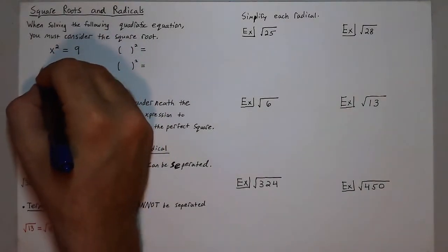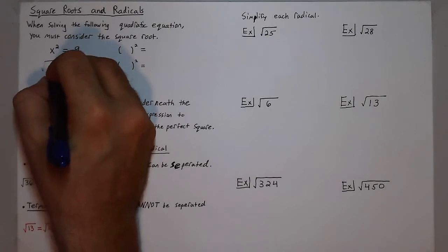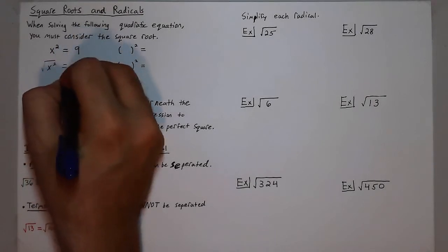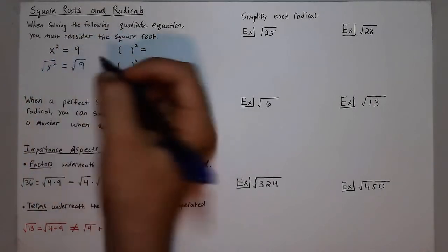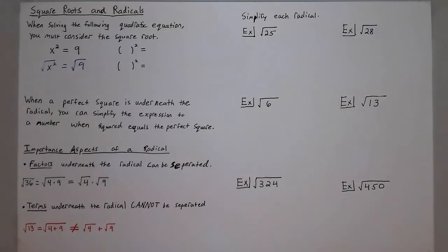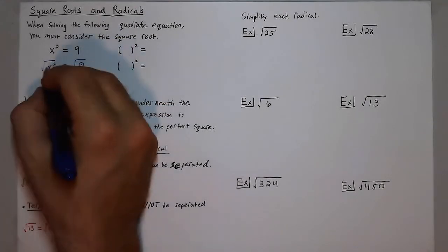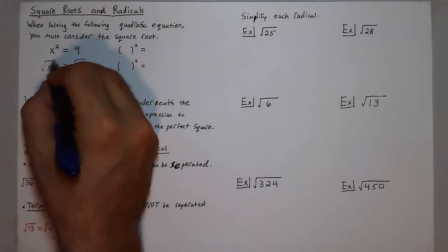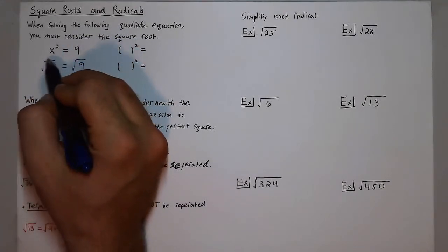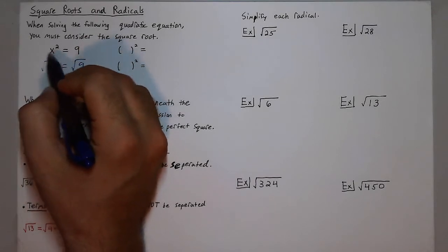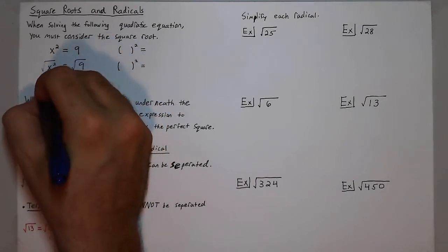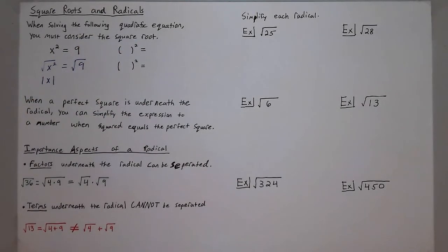So I could take the square root of x² as well as the square root of 9. Now when I do so, the square root of x² is a very particular expression — it actually represents the absolute value of x, which we talked about earlier in the year.